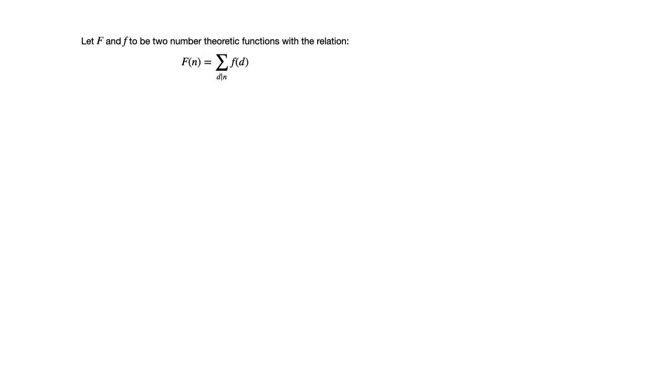Henceforth, let us define capital F and little f to be two number theoretic functions with the relation that capital F equals the sum of little f over the divisors of n. The symbol d divides n under the capital sigma symbol indicates that we have to sum little f over all the divisors of n.